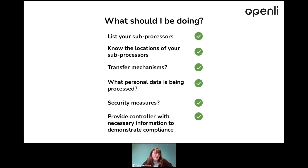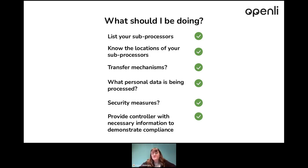There used to be a transfer mechanism called the Privacy Shield, which was invalidated by the Schrems case. Schrems is a very important case when it comes to transfer mechanisms because it invalidated the EU-US Privacy Shield. For transfer mechanisms, you need to ensure that every piece of data you transfer is fully protected, and that is conveyed to the controller so they know you are processing the data safely. You also need to know what personal data is being processed.